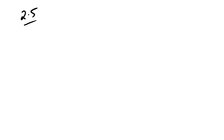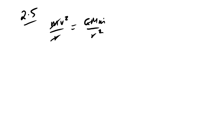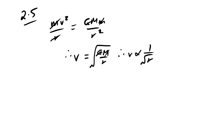Question 2.5: a satellite is in a higher circular orbit — what about its linear speed? Equating MV²/R = GMm/R²: one R cancels, both masses cancel, giving V = √(GM/R). Therefore V is proportional to 1/√R. So if R increases, V decreases.